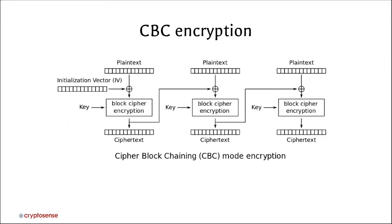Let's look at another way to encrypt a long plaintext that mixes things up so it's not so easy for an attacker. This is called Cipher Block Chaining mode, or CBC. In this mode, I introduce something called an initialization vector, or IV — which can just be a random value. It's fine for an attacker to know the IV; in fact, you need to send it along with the ciphertext for decryption. I XOR the IV against the plaintext, run that through my block cipher encryption function, and get the first block of ciphertext.